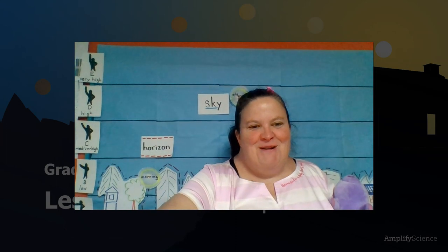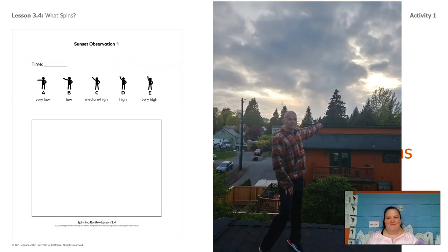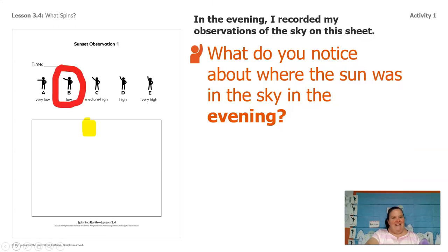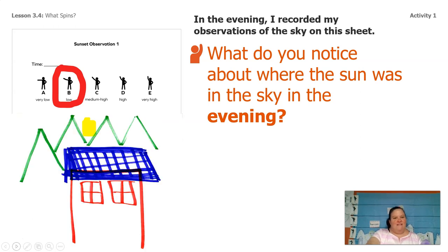Let's see what we came up with. At about 7:30 last night, I had my husband go out and point to where the sun was in the sky — I actually did it right after dinner. Would you say he's pointing to very low, low, medium, high, or very high? Me and Lavender had a disagreement about this — I thought it was low, she thought it was very low. I sketched what I saw at the horizon where the sun was at 7:30 in the evening.